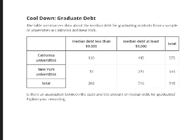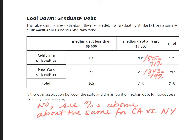Last question — go ahead and try this cool down on your own and pause the video. Here are the answers: you really can't say there's an association between the state — California or New York — and the amount of median debt. I calculated the percentage of universities with median debt of at least $9,000: California universities came to 77% and New York universities came to 79%. Those two percentages are so close together that you can't argue Californians have more debt than New York university students. You need to look at the percentages, not the raw numbers, to make this determination.